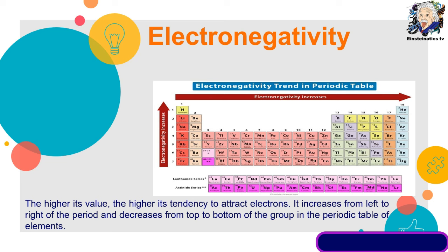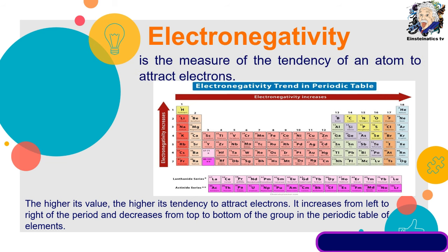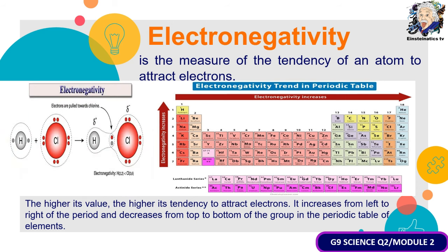The next key term is electronegativity — the measure of the tendency of an atom to attract electrons. Based on the periodic table, electronegativity increases from left to right and decreases from top to bottom. For example, between hydrogen and chlorine, since chlorine is much more electronegative than hydrogen, chlorine tends to pull the electrons of hydrogen toward itself.